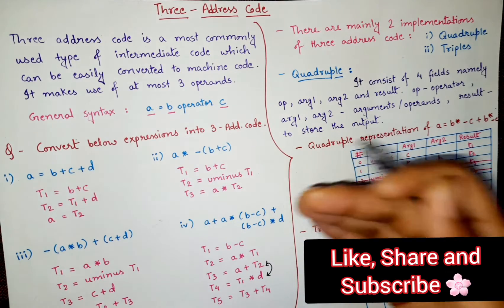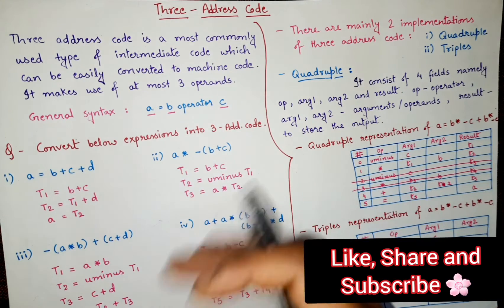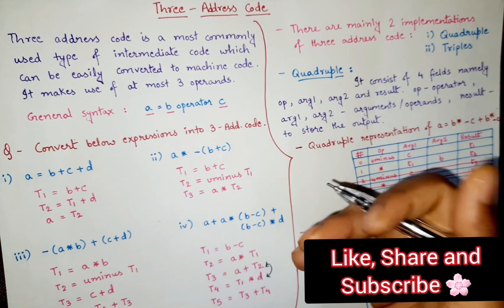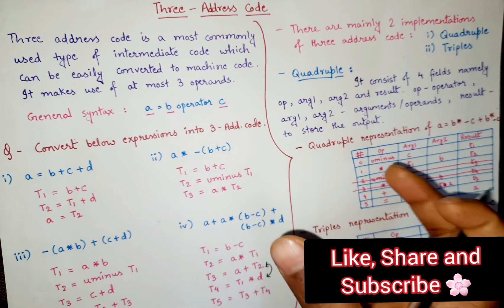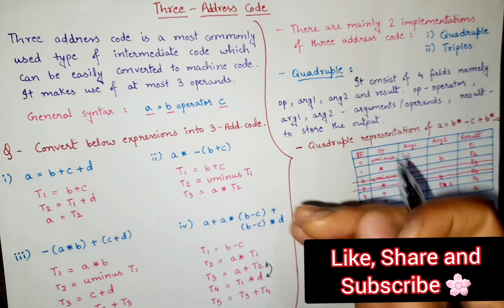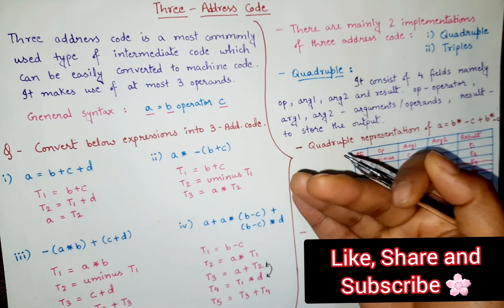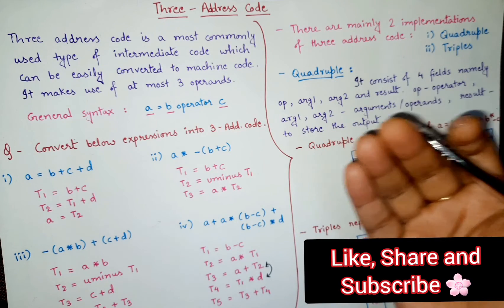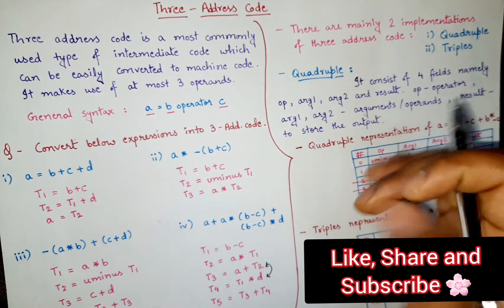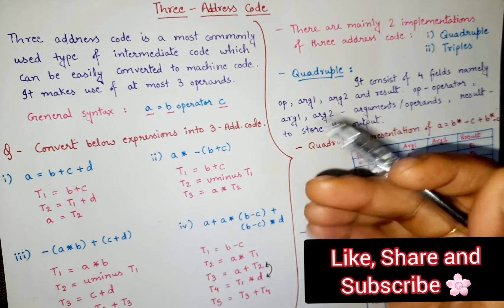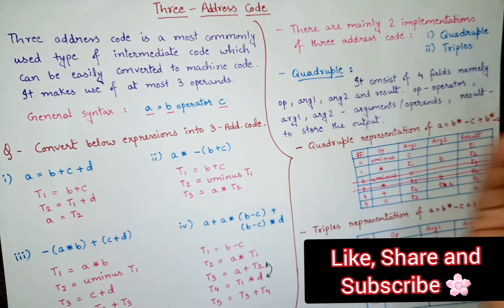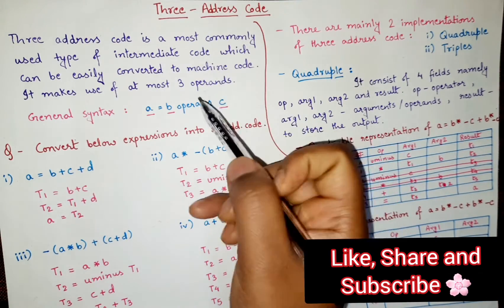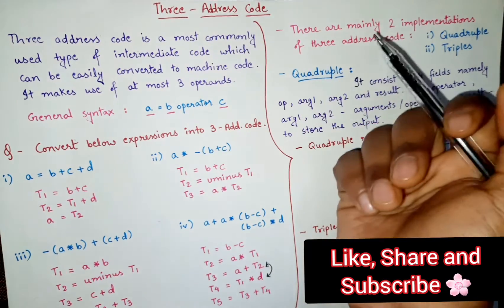You might remember when we were learning about the phases of the compiler — we were converting syntax into intermediate code using something known as an intermediate code generator. At that time I mentioned that in the intermediate code generator we can convert our code into any intermediate code. But one of the most commonly used intermediate codes is 3 address code, because it is very easy to represent and understand, and it can easily be converted into machine code.